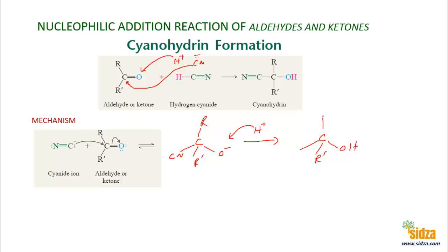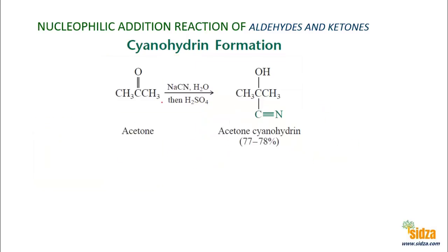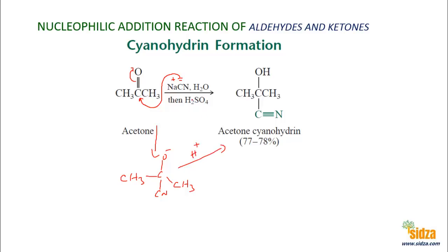For acetone reacting with sodium cyanide: the cyanide ion (CN⁻) attacks on the carbonyl carbon, the electron pair shifts to oxygen giving CH3C(O⁻)(CN)CH3, then when you acidify with H⁺, the proton goes to the oxygen and you get acetone cyanohydrin with an OH group. That covers the concept of nucleophilic addition reactions. Thanks for watching.